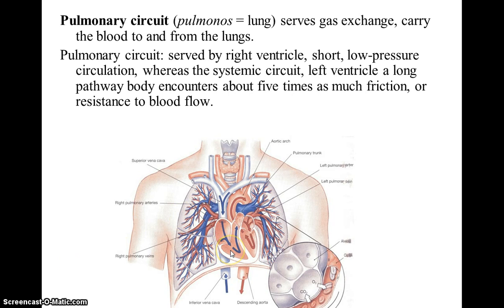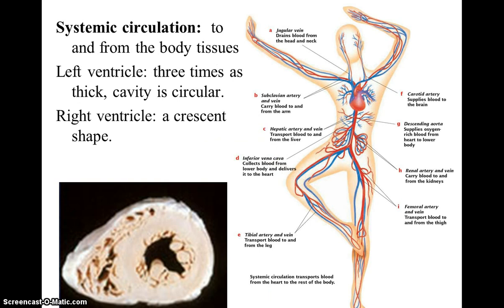The right side of the heart pumps blood to the lungs — this is known as the pulmonary circuit. The left side of the heart pumps blood to the rest of the body and its systems, so this side is known as the systemic circulation. This accounts for the thickness of the left ventricle compared to the right ventricle. Both ventricles pump the same volume of blood, but the myocardium surrounding the left ventricle is much thicker because it needs to provide greater force to pump blood to the whole body, whereas the right ventricle is pumping to the lungs, which are right next to the heart itself.